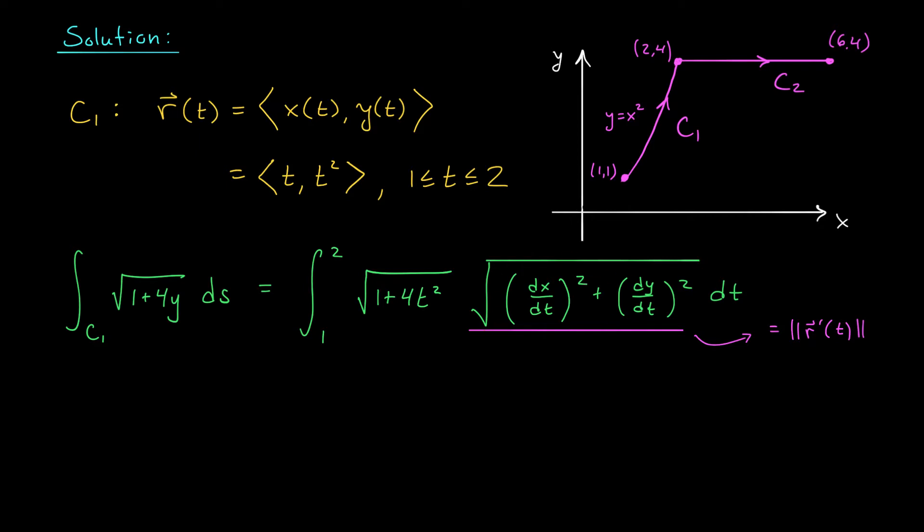So what we have is the integral from 1 to 2 of the square root of 1 plus 4t squared. The derivative of x with respect to t is just 1, so I have the square root of 1 squared, plus the derivative of y with respect to t is 2t, so I have 2t squared dt. Now, if you simplify this expression in the square root, you're exactly going to get 1 plus 4t squared. So our integral should simplify to the integral from 1 to 2 of 1 plus 4t squared dt, and I think you can probably evaluate this from here. We should get a final answer of 31 over 27.